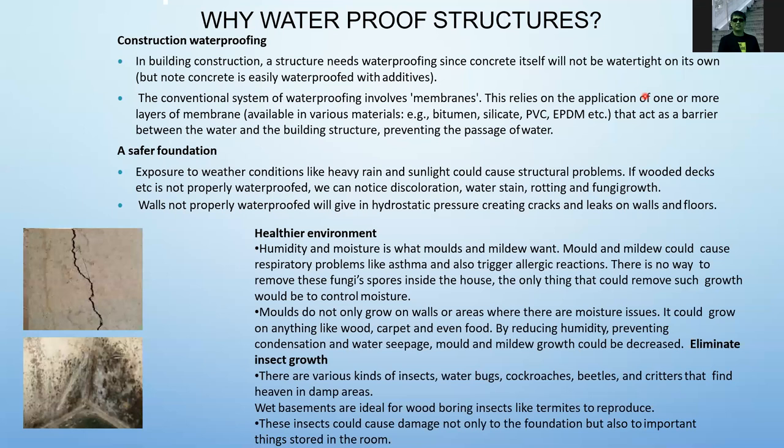Molds do not only grow on walls — they can grow on anything like wood, carpet, food, and furniture. By reducing humidity, preventing condensation and water seepage, mold and mildew growth can be reduced. Another reason to waterproof is to eliminate insects — various insects like water bugs, cockroaches, and beetles thrive in damp areas.